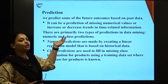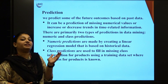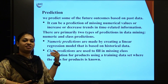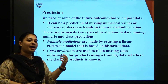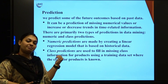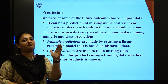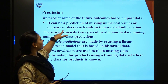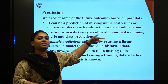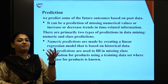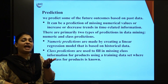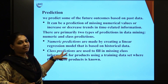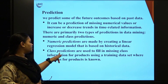Next, predictions. Prediction is based upon your past or previous data — from that you predict the future. For example, if customers of a locality keep buying Colgate products, based on that previous data I'll order more quantity. It can be a prediction of missing numerical values or increase/decrease trends in time-related information — whether a product will have high or low demand in the next stage.